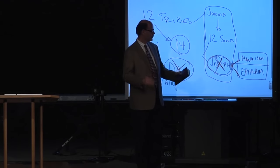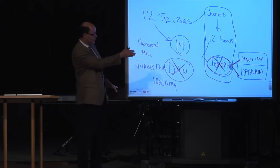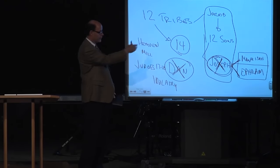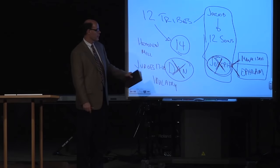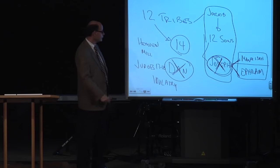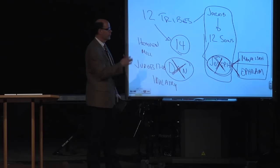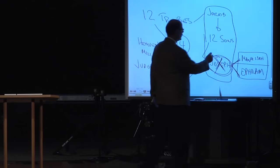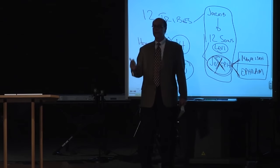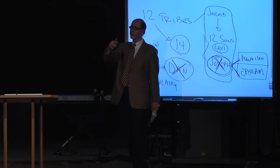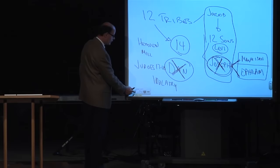To summarize: Dan is included in some lists like the foundations of heaven, but excluded from others like the national allotments and the 144,000. In the allotment lists, Joseph is replaced by Manasseh and Ephraim. Additionally, Levi never received a tribal allotment at all — the Levites were scattered throughout the land in cities of refuge. It's a fascinating study in how God's tribal lists shift depending on context and purpose.